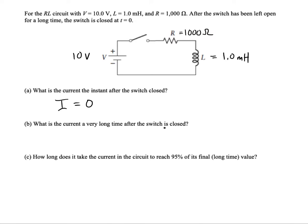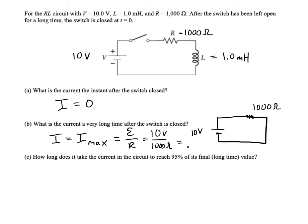What will be the current a very long time after the switch has been closed? When the switch has been closed for a long time the current will have built up to its maximum value which is sometimes called Imax. In order to find Imax what we should do is just pretend like the inductor is no longer playing an important role in the current flow. Pretend like you just have a resistor and EMF source. So we have 10 volts and a thousand ohms. To get the current then we'll just divide the EMF of the battery by the resistance. So that's 10 volts over a thousand ohms. It'll be 0.01 amps.